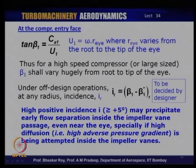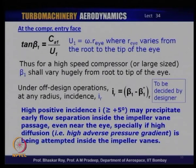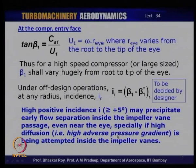High positive incidence — more than about 5° — even during off-design operation, could precipitate early flow separation inside the impeller vane passage, possibly as early as near the eye of the impeller, especially if the flow has gone transonic or supersonic. In conjunction with shocks and separation, this could create rather unstable flow conditions right at the inlet. When a centrifugal compressor is designed especially in aero engines for high diffusion, this must be designed very properly and accurately so that separation is not precipitated right at the impeller eye, because it will carry through the entire impeller vane passage and very adversely affect operation.